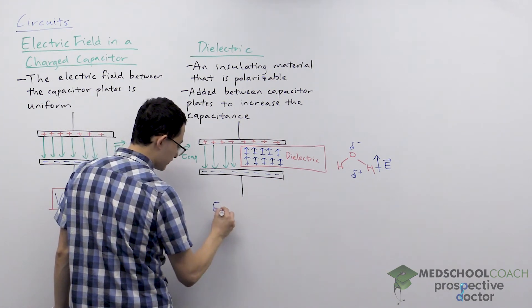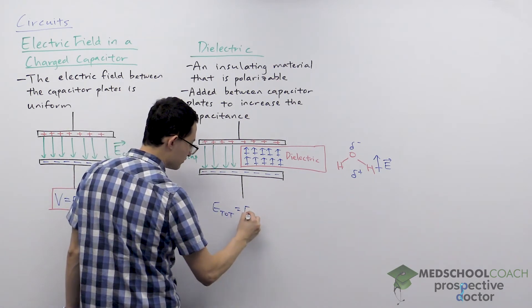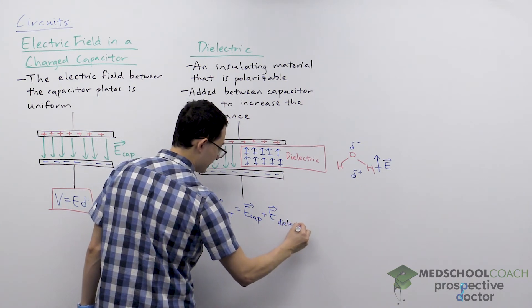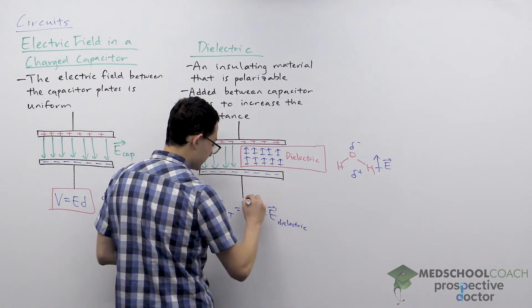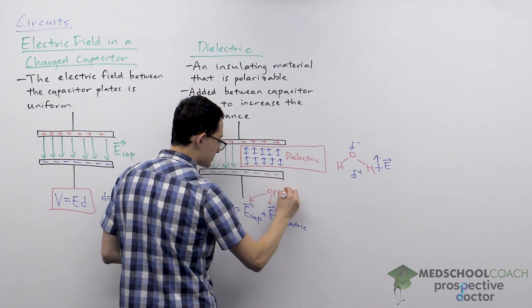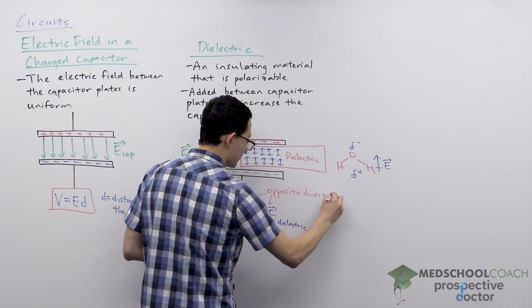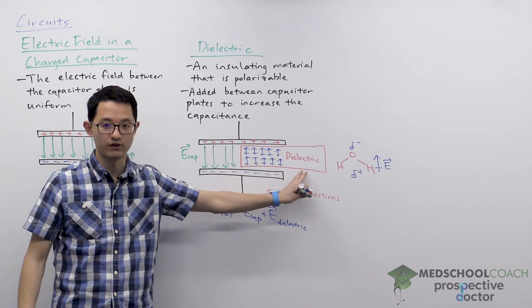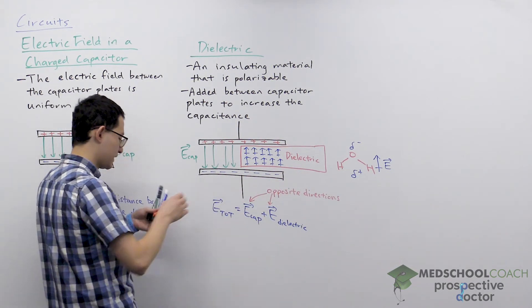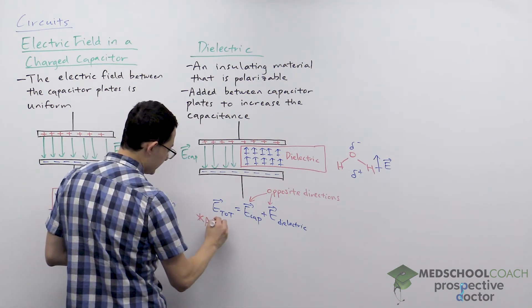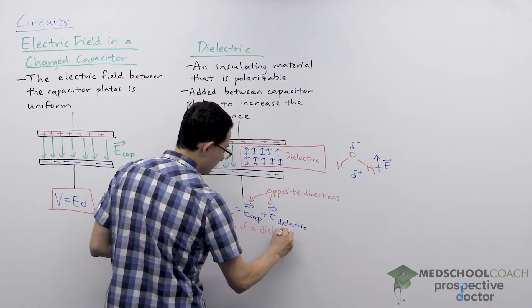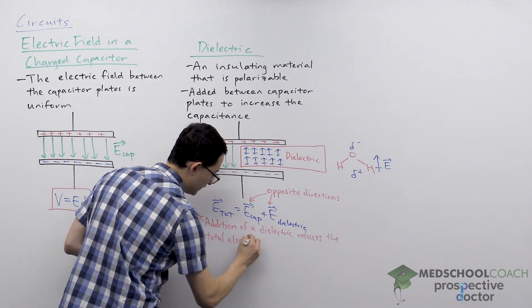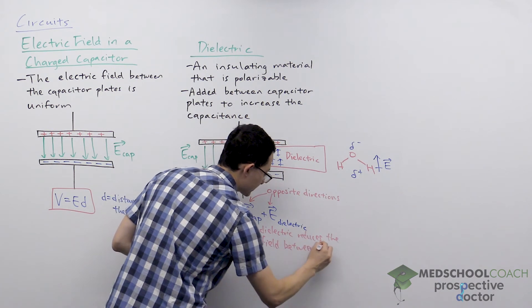When you add in the dielectric, you have to look at the total electric field between the capacitor plates, which is equal to the electric field of the capacitor plus the electric field of the dielectric. However, it's important to note that these two electric fields are in opposite directions. Because they're in opposite directions, these two electric fields are going to partially cancel out. They don't completely cancel out because the electric field of the capacitor is greater than the electric field of the dielectric. The main result is that the addition of a dielectric reduces the total electric field between the capacitor plates.